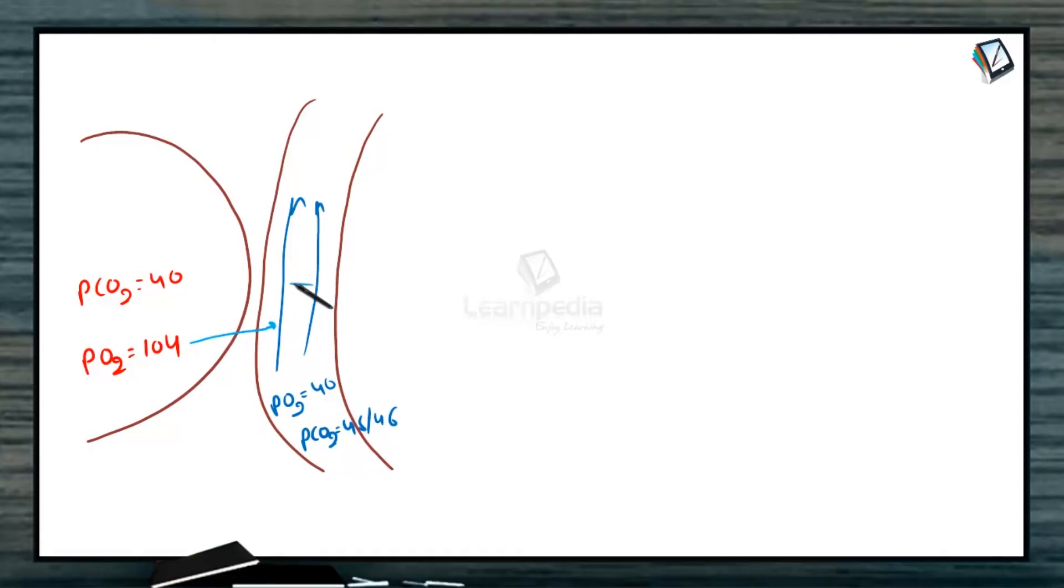Let us now discuss both the exchanges, external as well as internal with a flow chart. Let us suppose this is alveoli and this is some blood capillary. In alveoli, PO2 is 104 and PCO2 is 40. Blood reaching to alveoli has PO2 40 and PCO2 45 or 46. Blood moving ahead will get oxygen and will release CO2. At this point, PO2 gets 95 and PCO2 gets around 40. In tissue cells due to oxidation of glucose, level of PO2 gets decreased up to 40 and level of PCO2 gets increased up to 45 or 46.